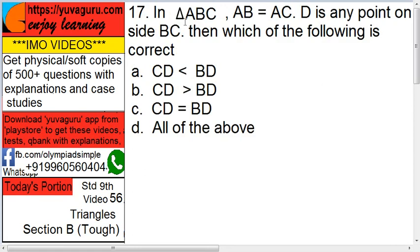Next, in triangle ABC, we don't have any figure now. AB equals to AC. It means it's an isosceles triangle. D is any point on side BC. Then which of the following is correct?